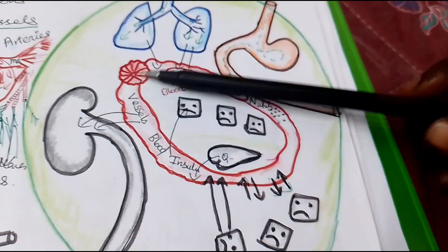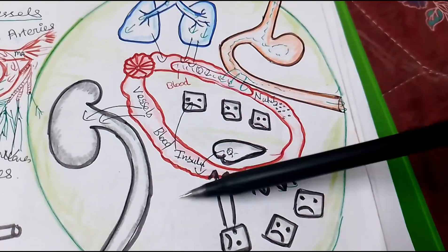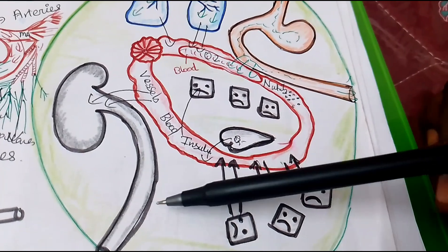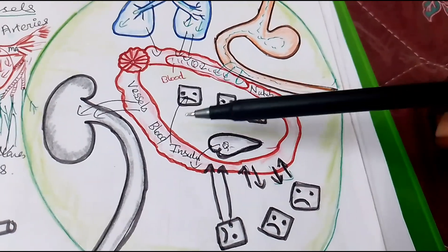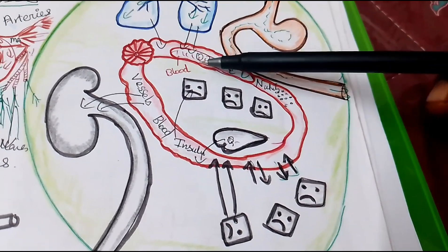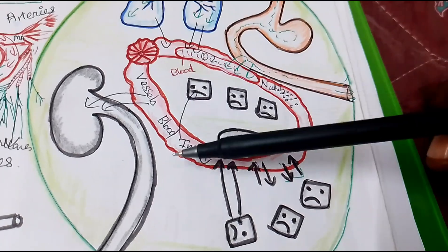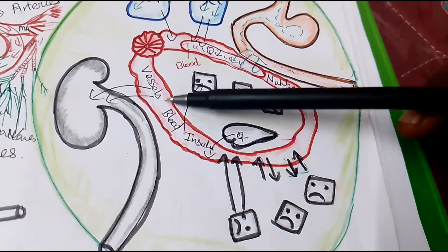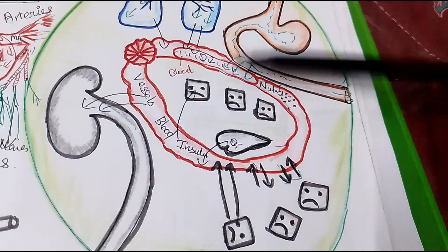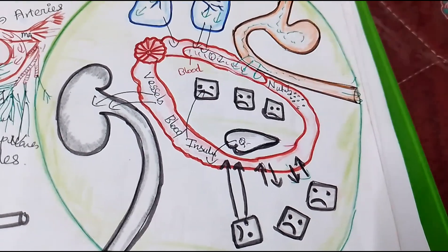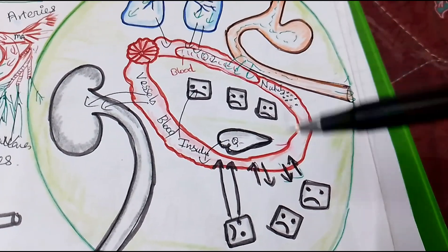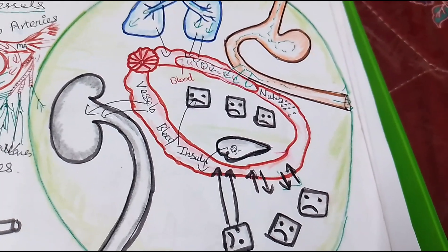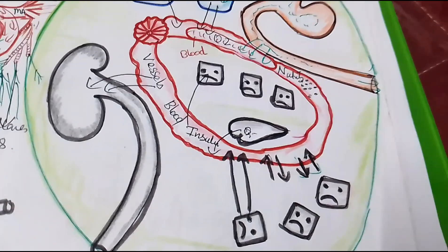So this is how the circulatory system works. The three major components of the circulatory system are blood, vessels, and the heart. These play the major role in taking nutrients and oxygen to the deeper parts of the cells.